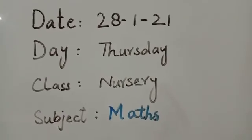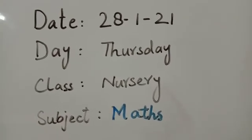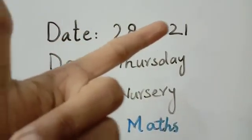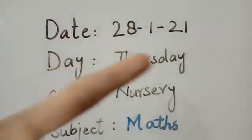So starting our day with the name of Almighty Allah, what's day today? So today's date is 28th of January 2021. And what's day? Thursday.